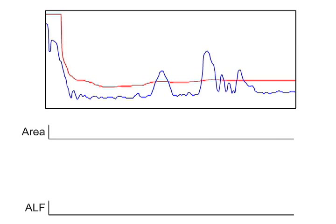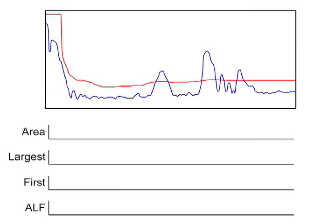ALF stands for area, largest, and first. The ALF algorithm will evaluate all of the echoes above the TVT curve and give them a score based on the amount of area under the curve, the height of the echo above the TVT, and the echo's position along the TVT curve.